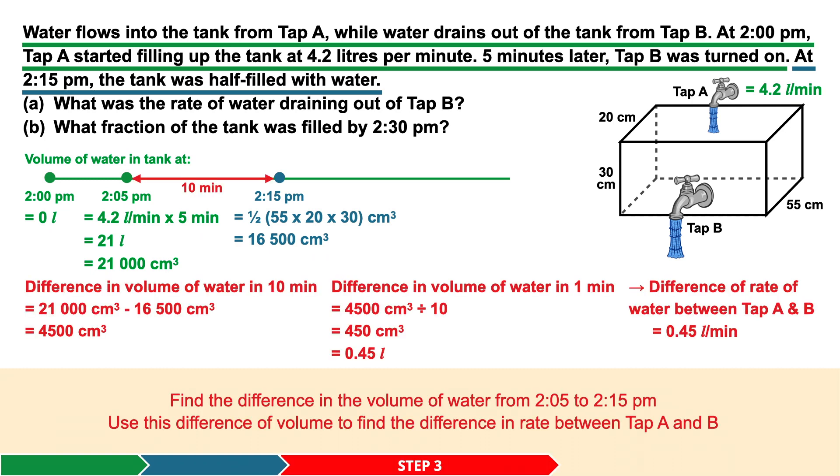Step 3. By subtracting 16,500 cubic centimeters from 21,000 cubic centimeters, we can find the difference in the volume of water during the 10 minutes from 2:05 to 2:15 p.m., which is 4,500 cubic centimeters. We then divide this by 10 to find the difference in the volume of water in 1 minute. 4,500 cubic centimeters divided by 10 gives us 450 cubic centimeters, which is equivalent to 0.45 liters.